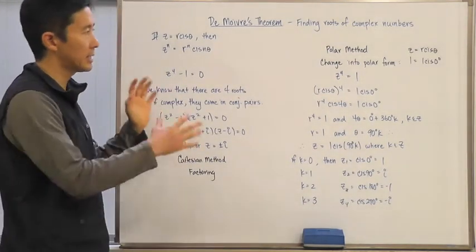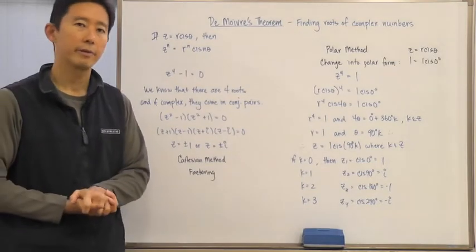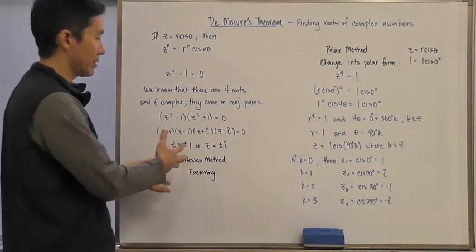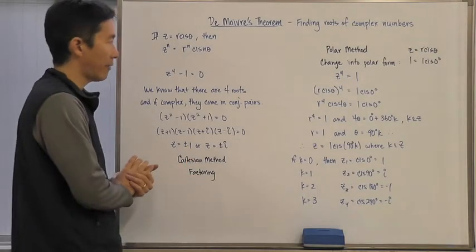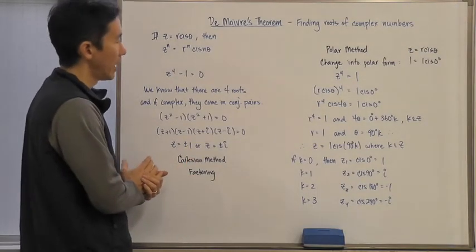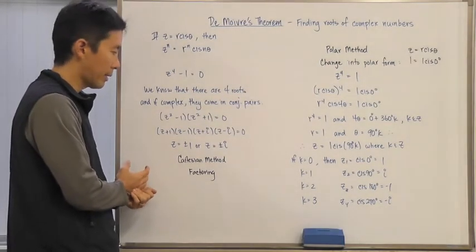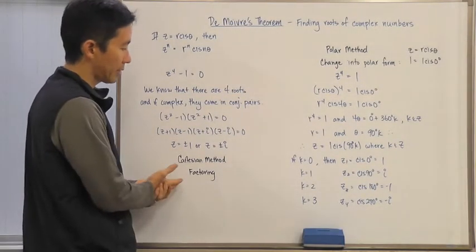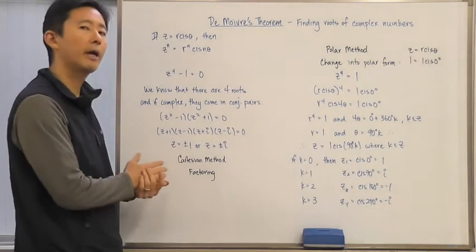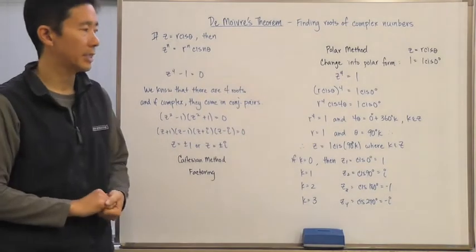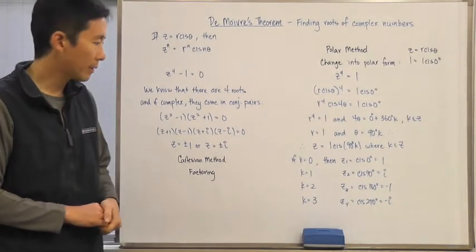Okay, so a lot of consistency here with some of the things that we've learned, not only with regards to how many solutions we have, but also how we can find the solutions for a particular complex equation or complex polynomial by using either the Cartesian method of factoring, and when it's not factorable, using the polar method and changing things into its polar form.